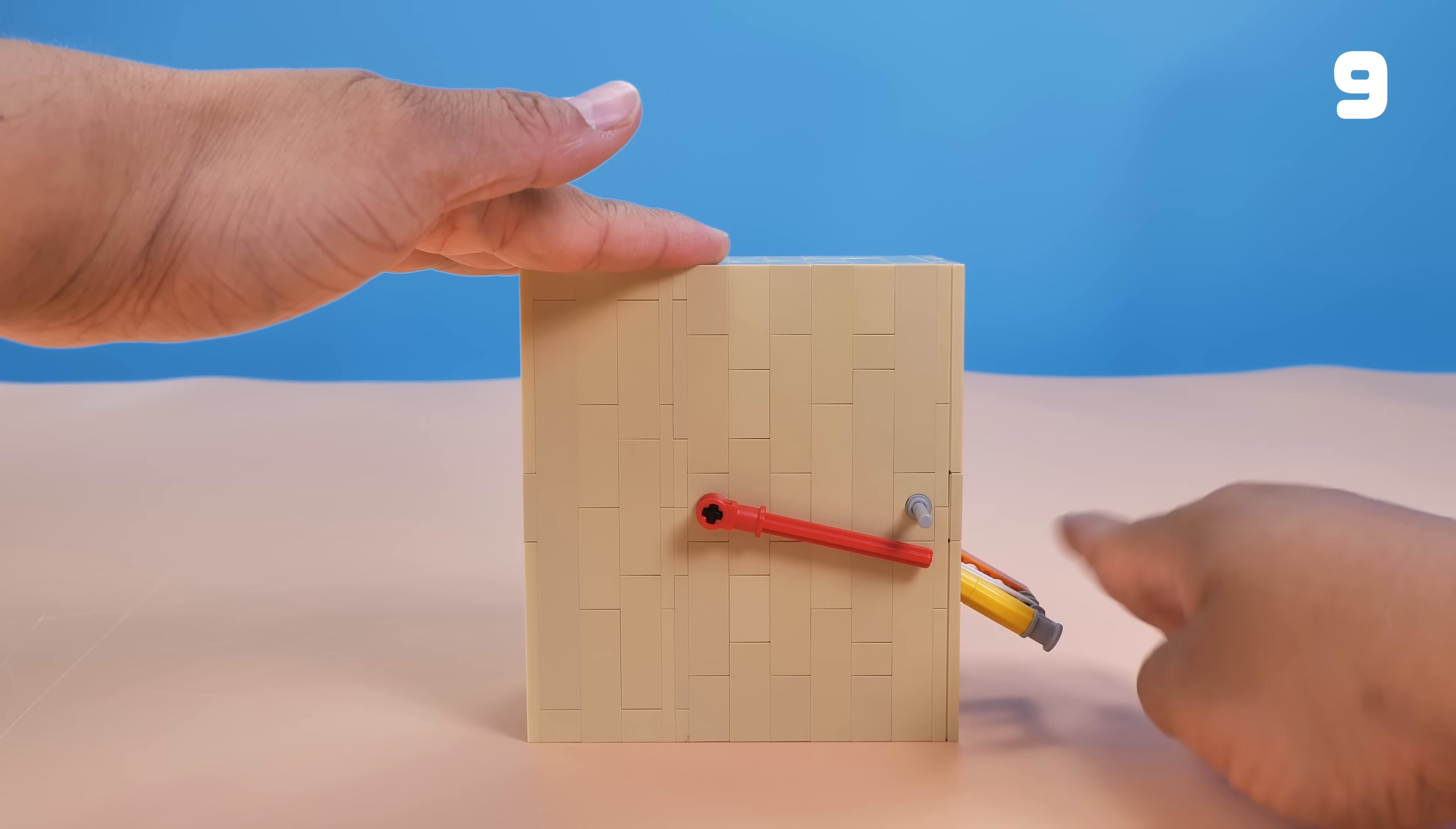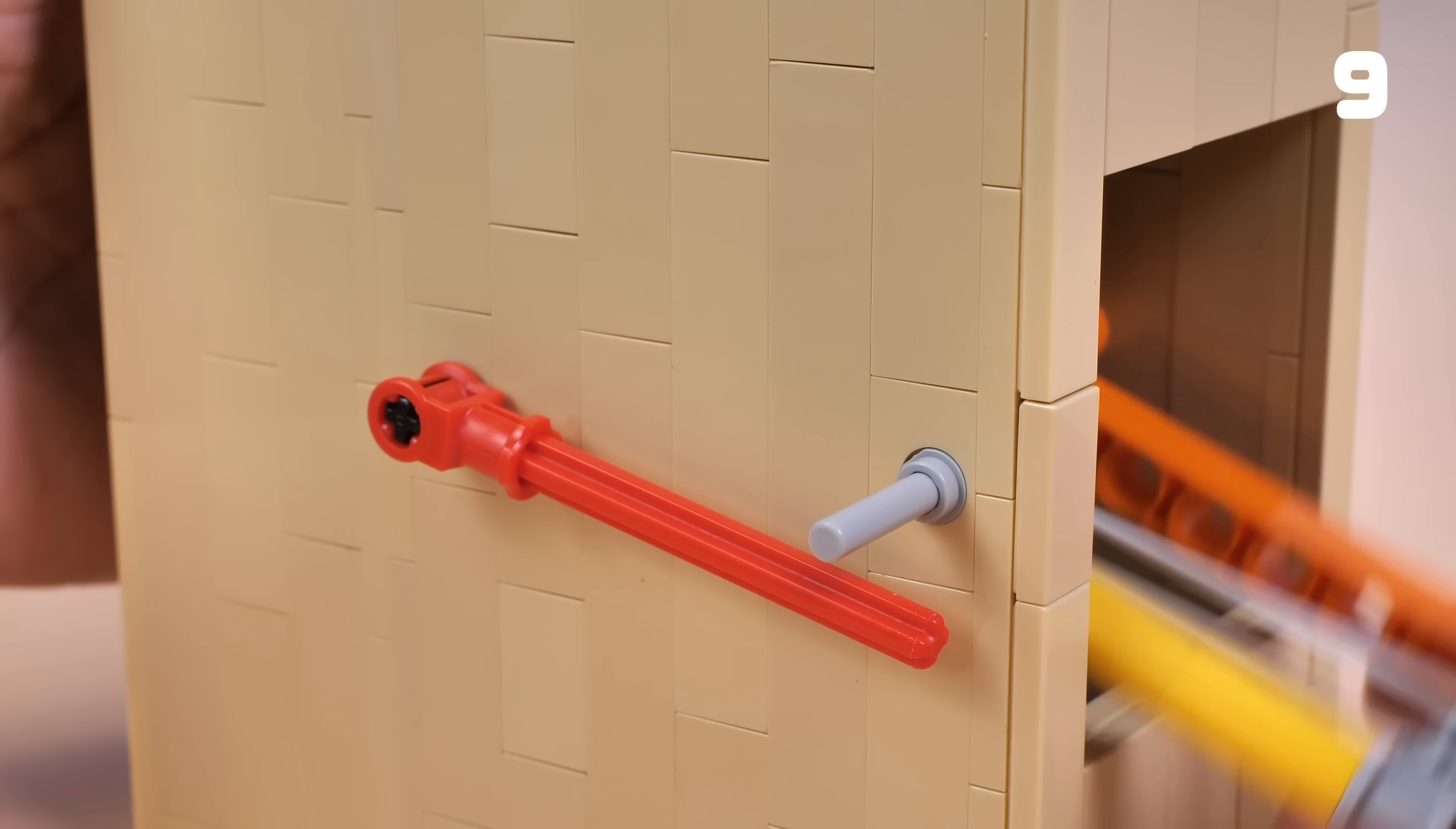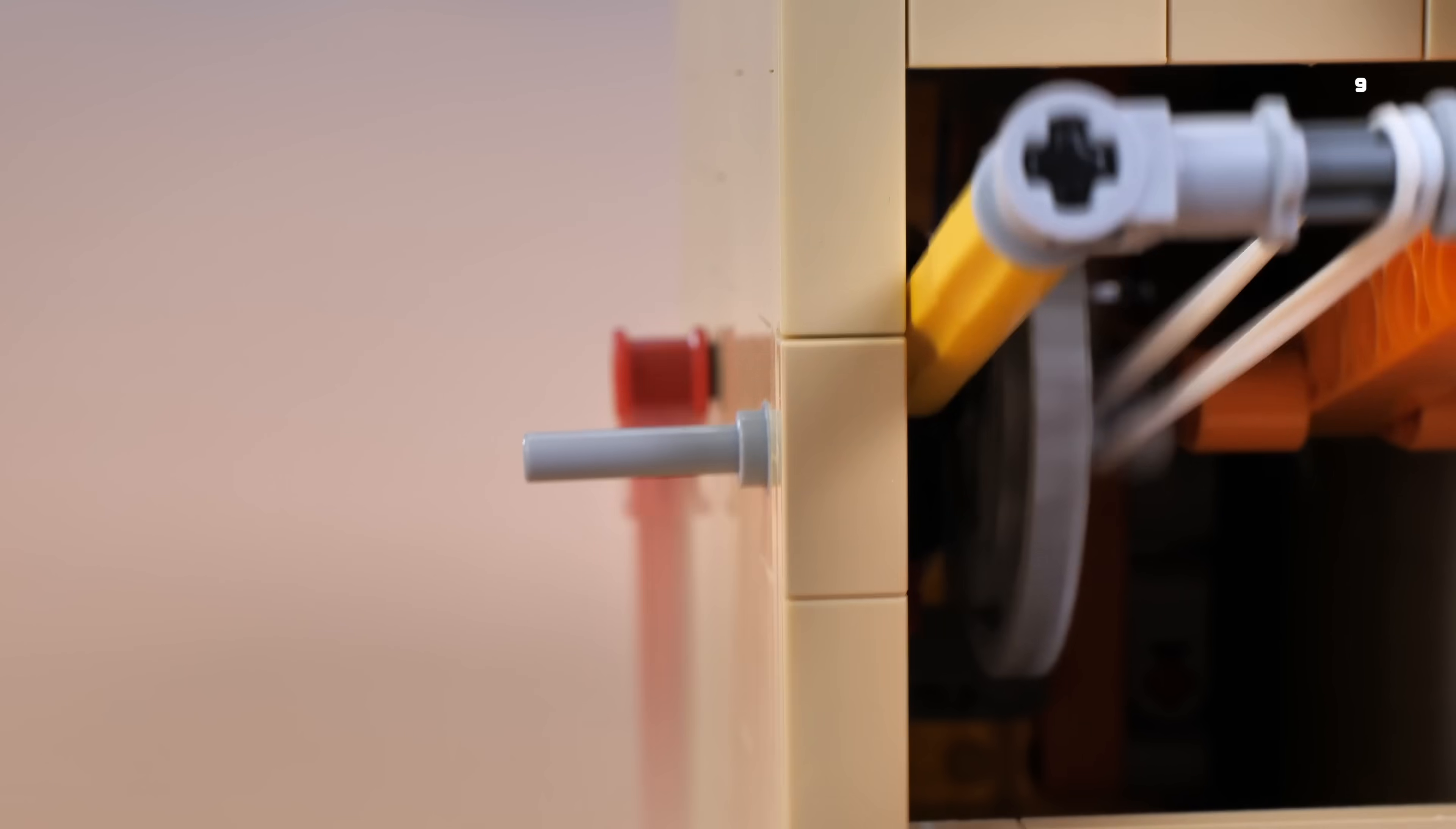This is a LEGO magic trick, and you'll find that the red axle spins through the grey pin. If you observe carefully, you may find out why.